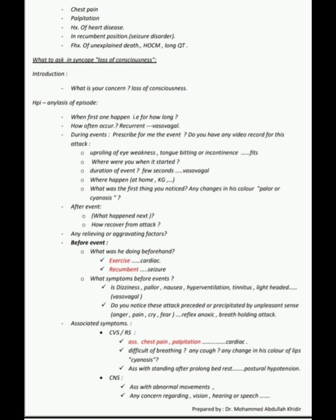Ask what was the first thing noticed, any changes in color such as pallor or cyanosis, and how recovery occurred after the attack. Before the events, ask what the child was doing — any exercise (suggesting cardiac cause) or recumbent position (suggesting seizure). Ask about pre-event symptoms: dizziness, pallor, nausea, hyperventilation, tinnitus, lightheadedness suggesting vasovagal. Ask if the attack was precipitated by anger, pain, crying, or fear — suggesting reflex anoxic or breath-holding attack.